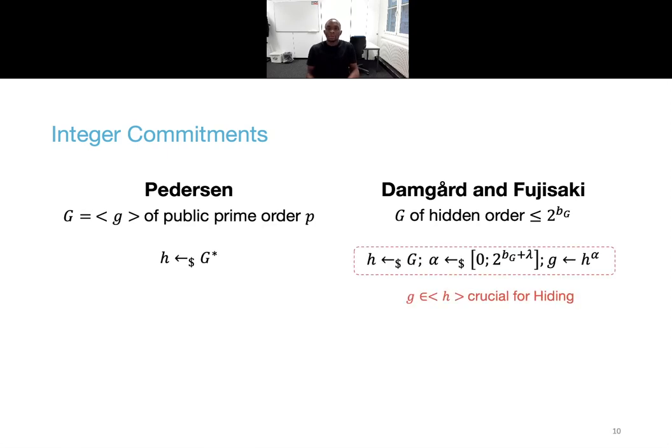Then to generate parameters, one samples the group element h, chooses an exponent alpha over a set of integers with size at least 2 times lambda times the group order, to be statistically close to uniform, and then one computes g as h to the alpha. It is paramount to have g in the subgroup generated by h to guarantee that the scheme is hiding. Without it, it cannot be sure. Of course, this problem does not occur in the case of prime order groups as they are cyclic, but it's not the case of hidden order groups.